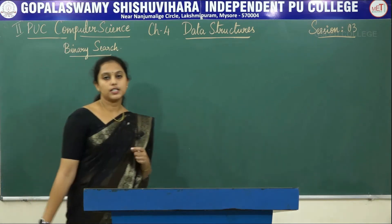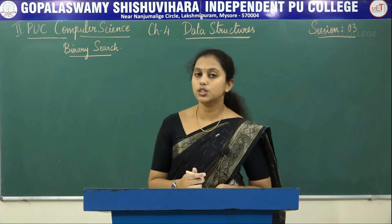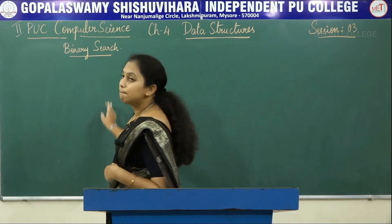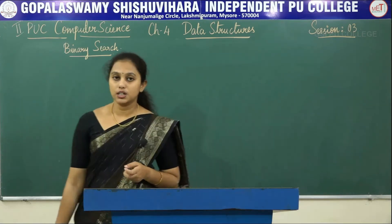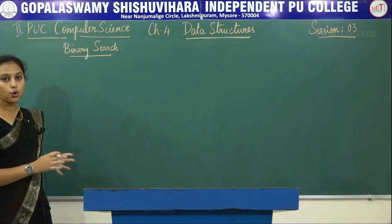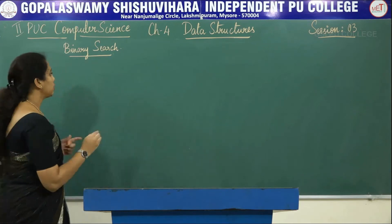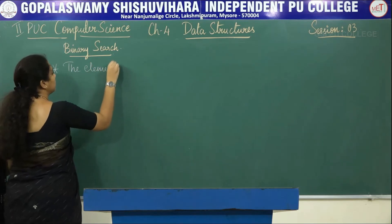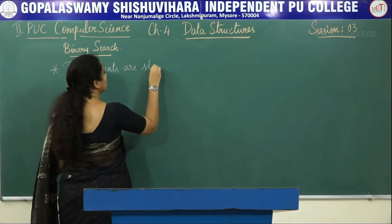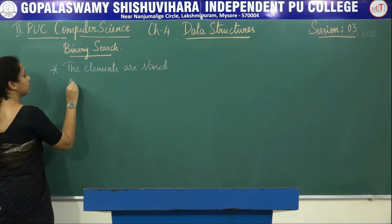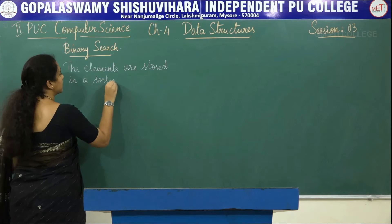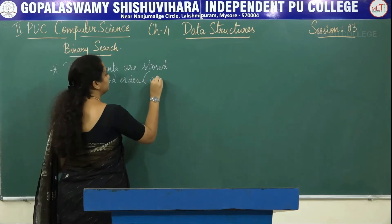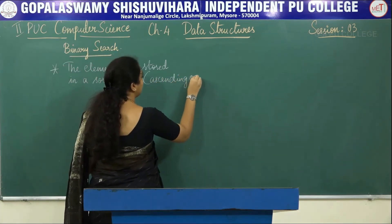The drawback of linear search is that it takes a lot of time to search the location of an element. To overcome that drawback we are going to use binary search. In binary search the elements should be stored in sorted order, that is in ascending order.